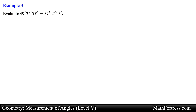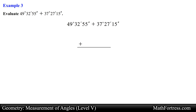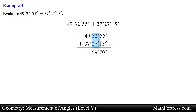Let's move along to slightly more challenging examples. Evaluate 49 degrees 32 minutes 55 seconds plus 37 degrees 27 minutes 15 seconds. We are given two angle measures and asked to find their sum. We can add angles similar to the way we add numbers by aligning them in a vertical column and adding the seconds, minutes, and degrees of each angle with one another.